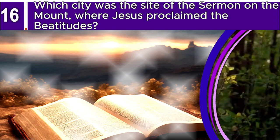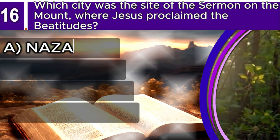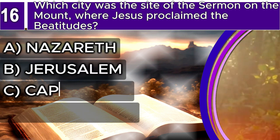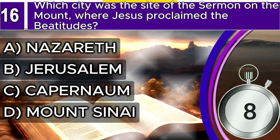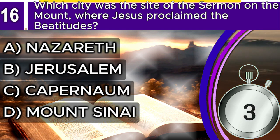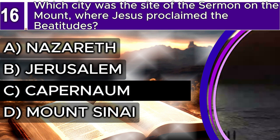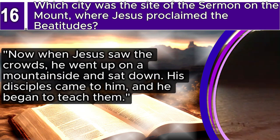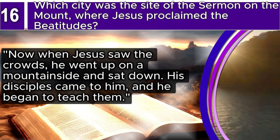Question 16. Which city was the site of the Sermon on the Mount where Jesus proclaimed the Beatitudes? A. Nazareth, B. Jerusalem, C. Capernaum, D. Mount Sinai. The correct answer is C. Capernaum. Matthew 5, verses 1–2 says: Now when Jesus saw the crowds, he went up on a mountainside and sat down. His disciples came to him, and he began to teach them.